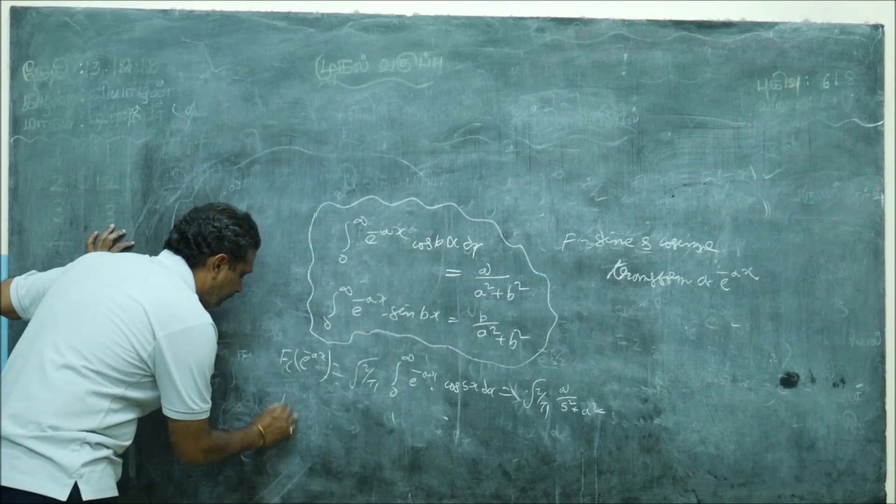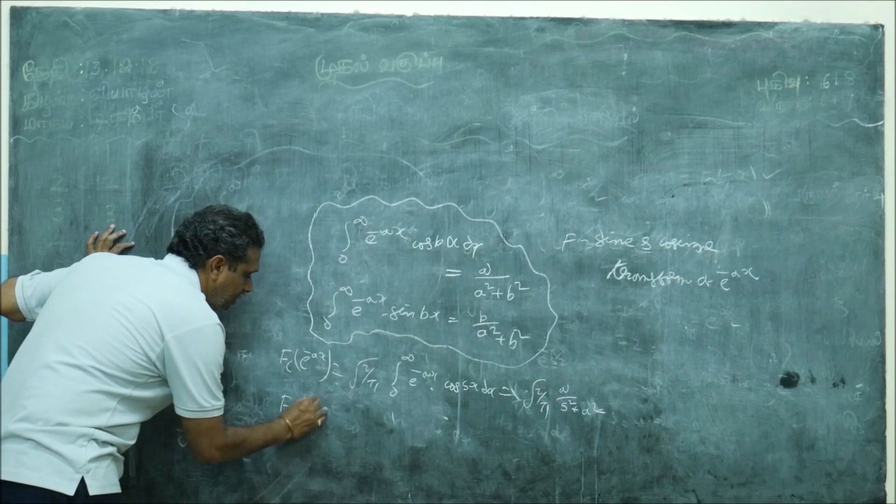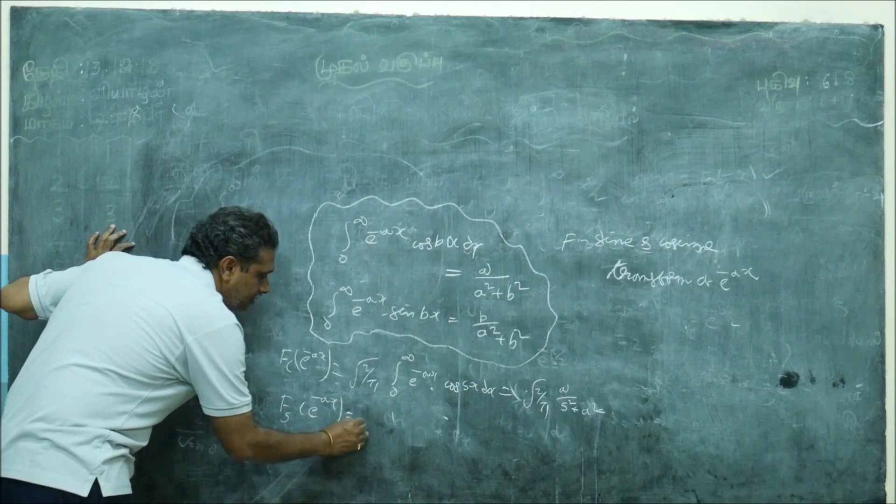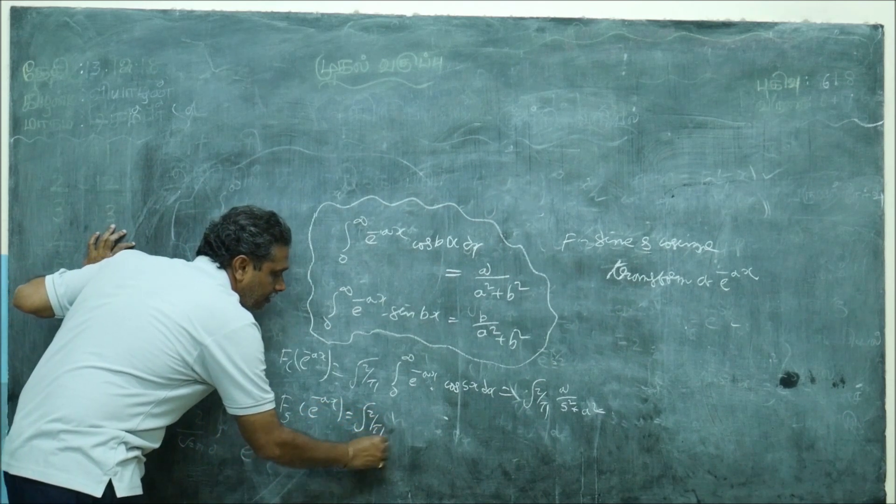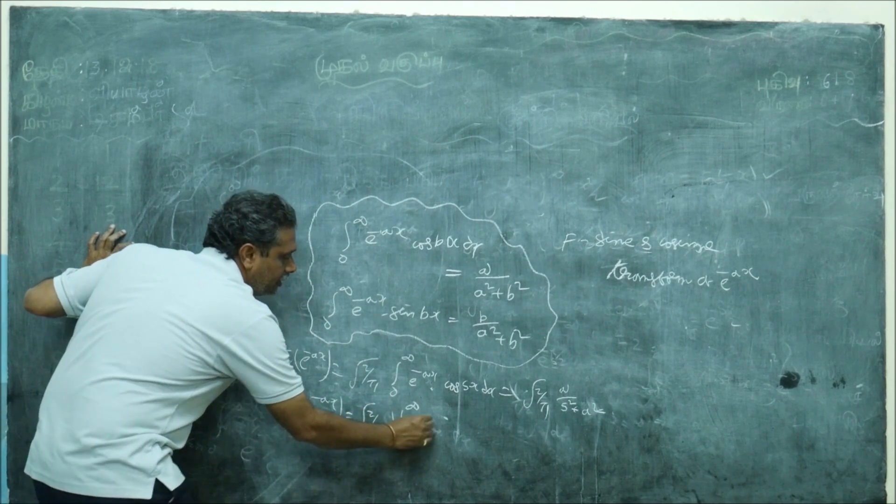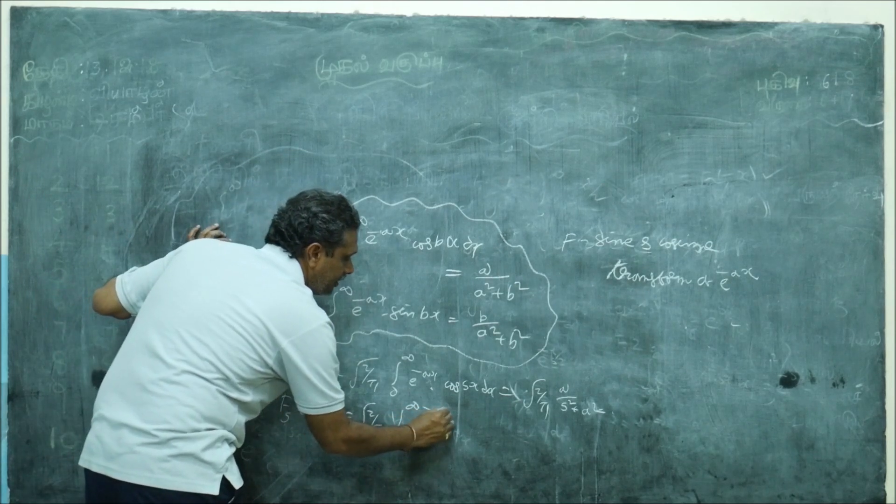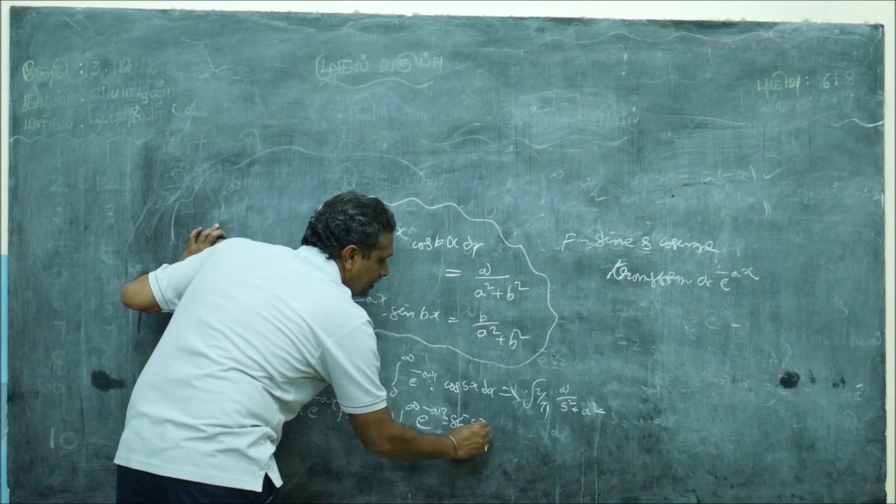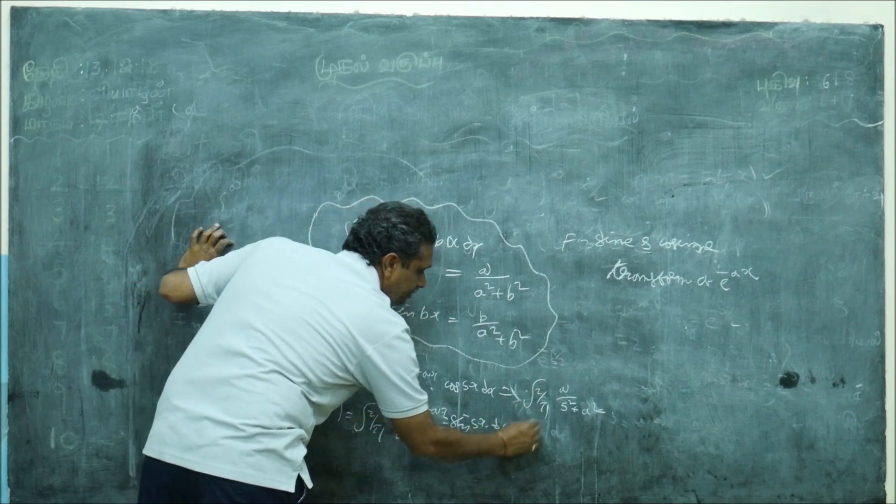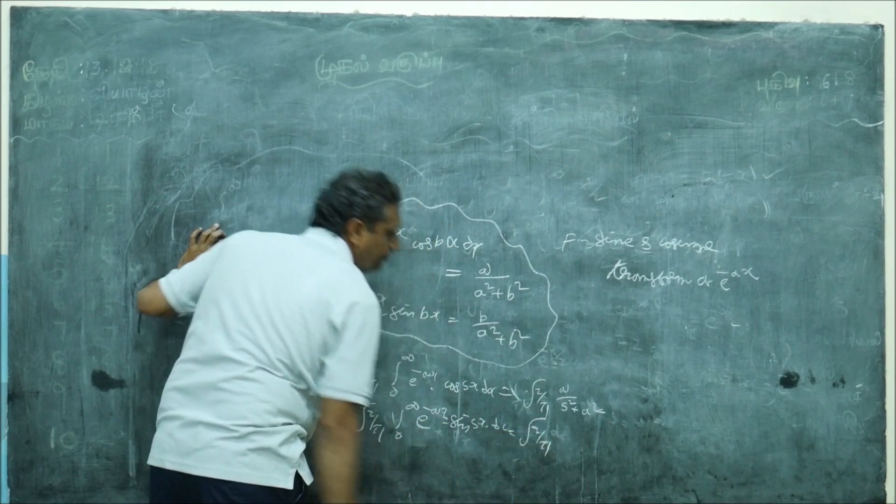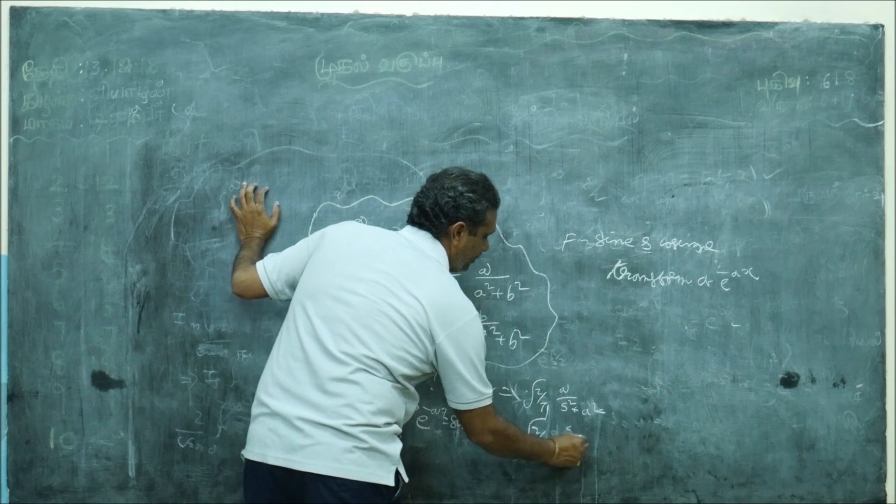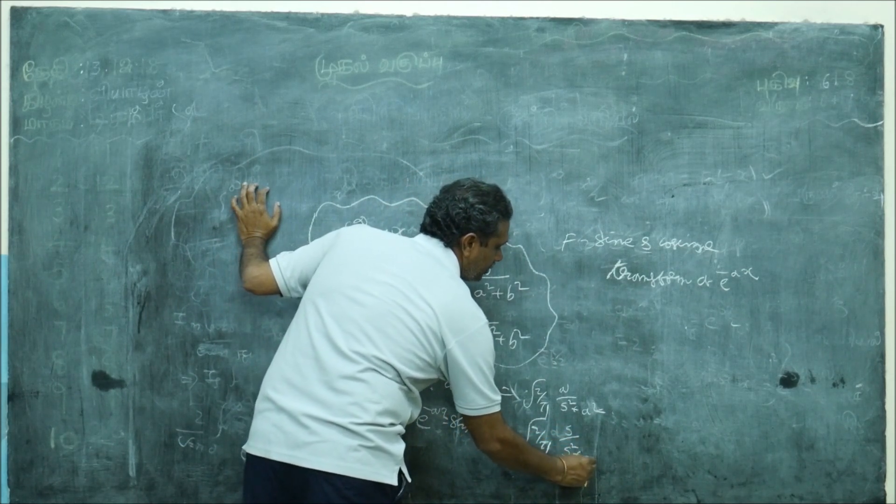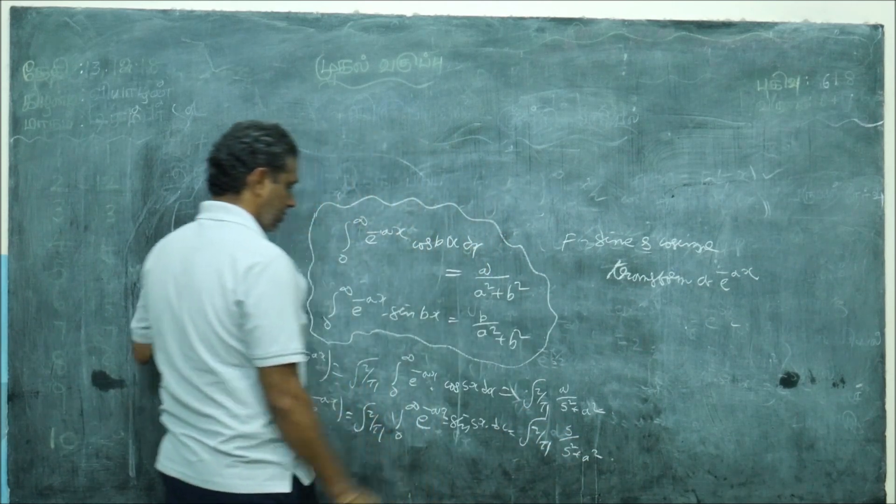Similarly, Fourier sine of e power minus a x is root 2 by pi, 0 to infinity, e power minus a x sin s x dx. So, what you get? Same story.